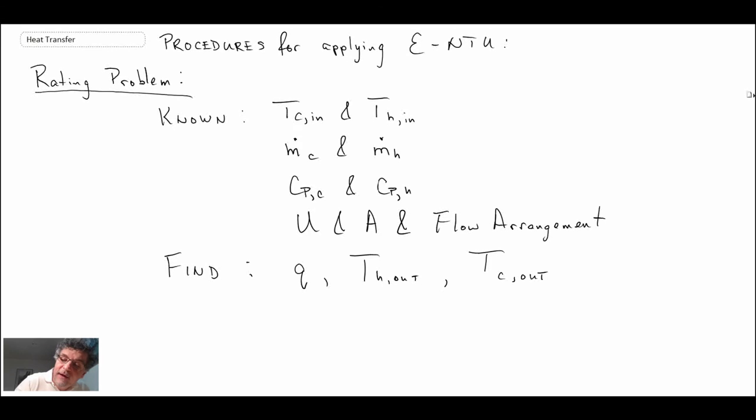So using the effectiveness-NTU for this type of problem, we can go through a step-by-step procedure. What I would recommend when you're solving these problems: don't necessarily adhere to these procedures exactly as I'm showing here. Sometimes it's a matter of using common sense, looking at what you have and what you don't have. You're solving a bit of a puzzle when you're solving these problems because every one can be a little tiny different or have a slight difference from one problem to another. But that is just an example of procedures that you can use for solving these types of rating problems.